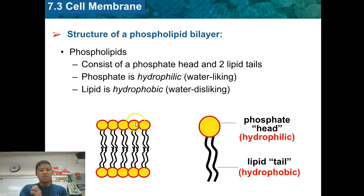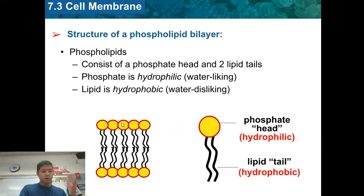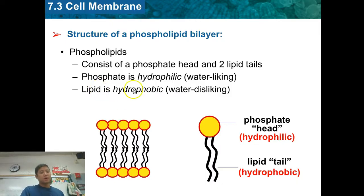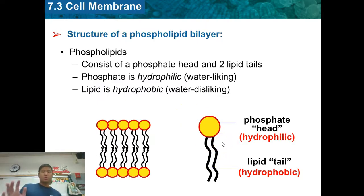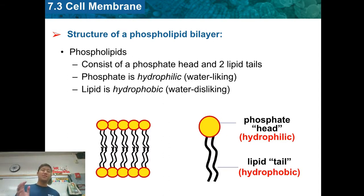The phosphate heads are hydrophilic, meaning they really like water. There's water outside the cell and inside the cell, so they arrange themselves facing the water. The lipid tails are hydrophobic — they do not mix with water. Hydrophobic means they dislike water, just like a phobia — arachnophobia means you're scared of spiders. So the lipid tails stay on the inside of this sandwich to avoid the water.